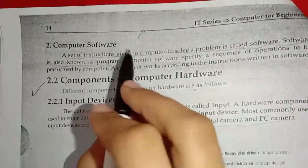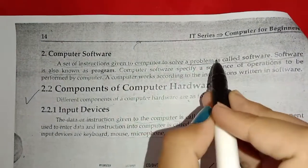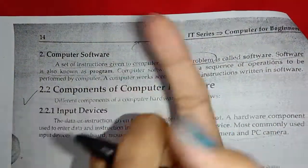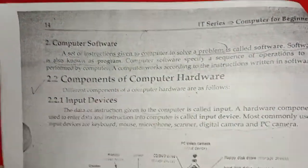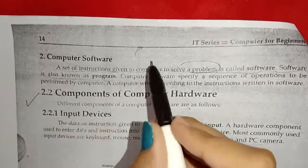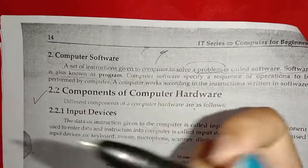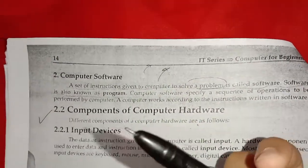What is computer software? A set of instructions given to the computer to solve a problem. To solve a problem we have to use software.